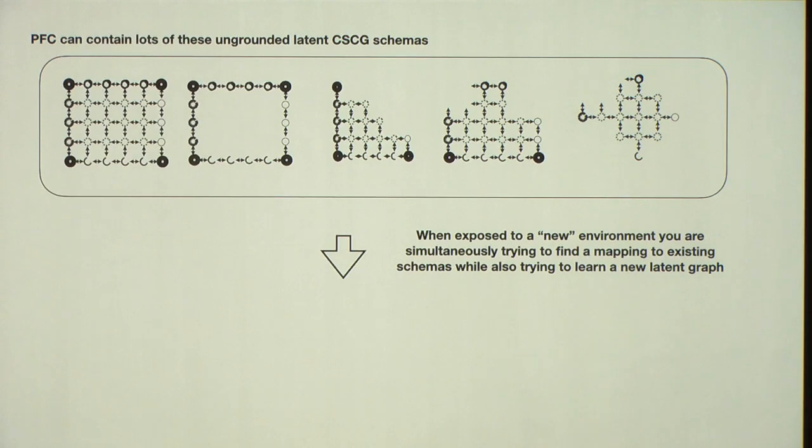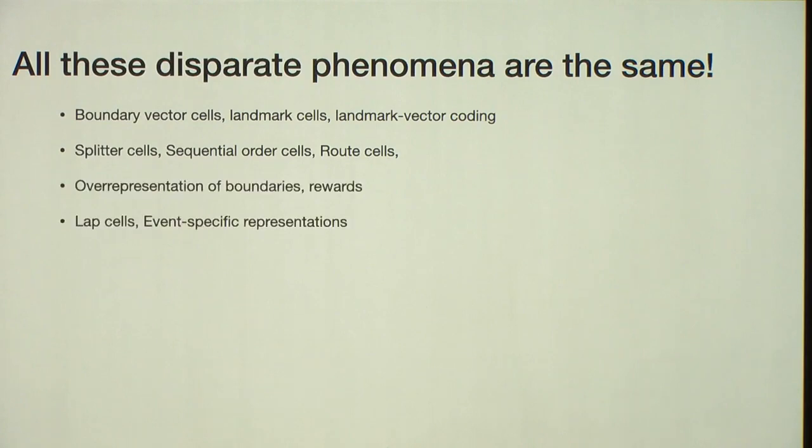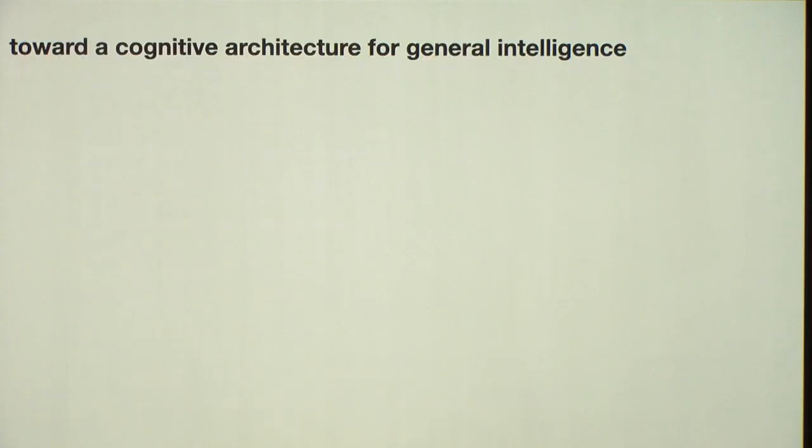So I'm going to argue that whenever you learn maps, there is another process which is basically going to look at all these maps and extract the schema, CSCG out of them and all these CSCGs or schema graphs will be in your brain. Of course the schemas will be fewer in number compared to the number of maps you have seen because the same schema can map to many different maps. And when you're exposed to a new environment, you are simultaneously trying to see, oh, can I map the new environment through any of the schemas that exist in the brain by layering this emission matrix, which is extremely fast process. And also at the same time, trying to learn a new map and there'll be some competition between them. So hopefully I've convinced you that all these different phenomena are all the same and can be explained using pure sequence learning.